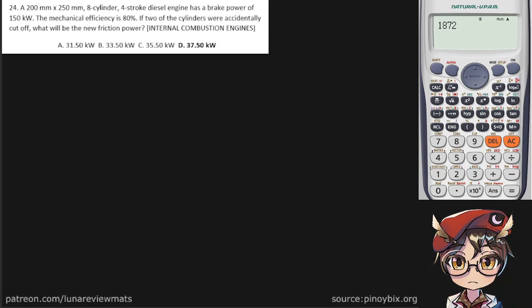A 200mm by 250mm 8-cylinder 4-stroke diesel engine has a brake power of 150kW. The mechanical efficiency is 80%. If two of the cylinders were accidentally cut off, what would be the new friction power?